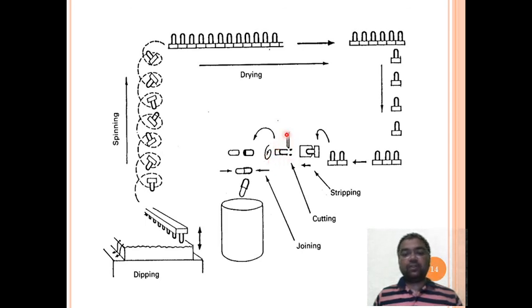These stationary knives cut down the caps and body to desired shape and finally the caps and body are joined and collected in a collecting chamber. This figure simply explains all steps involved in manufacturing of hard gelatin capsule shell.